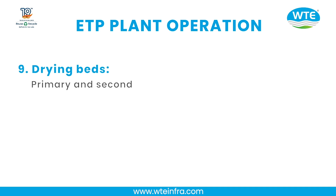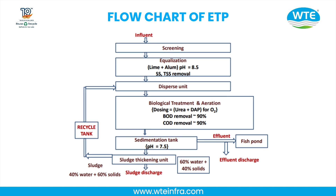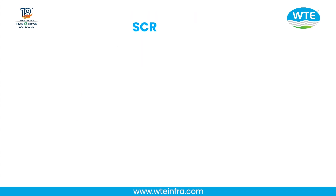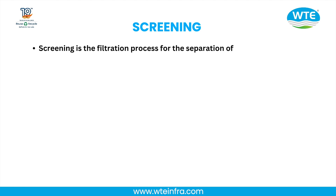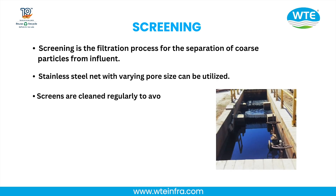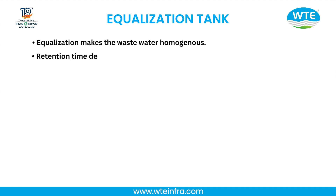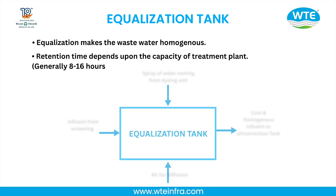Step 9 — Drying Beds: Primary and secondary sludge is dried on the drying beds. Screening is the filtration process for separation of coarse particles from the influent. Stainless steel nets with varying pore sizes can be utilized. Screens are cleaned regularly to avoid clogging. The Equalization Tank makes the wastewater homogeneous; retention time depends upon the capacity of the treatment plant — generally 8–16 hours.